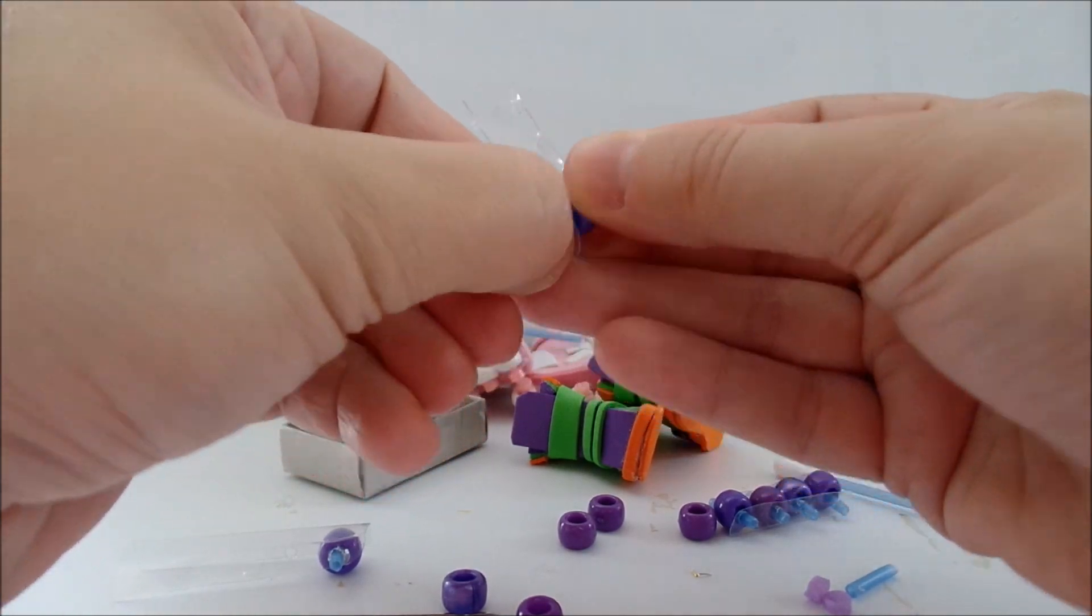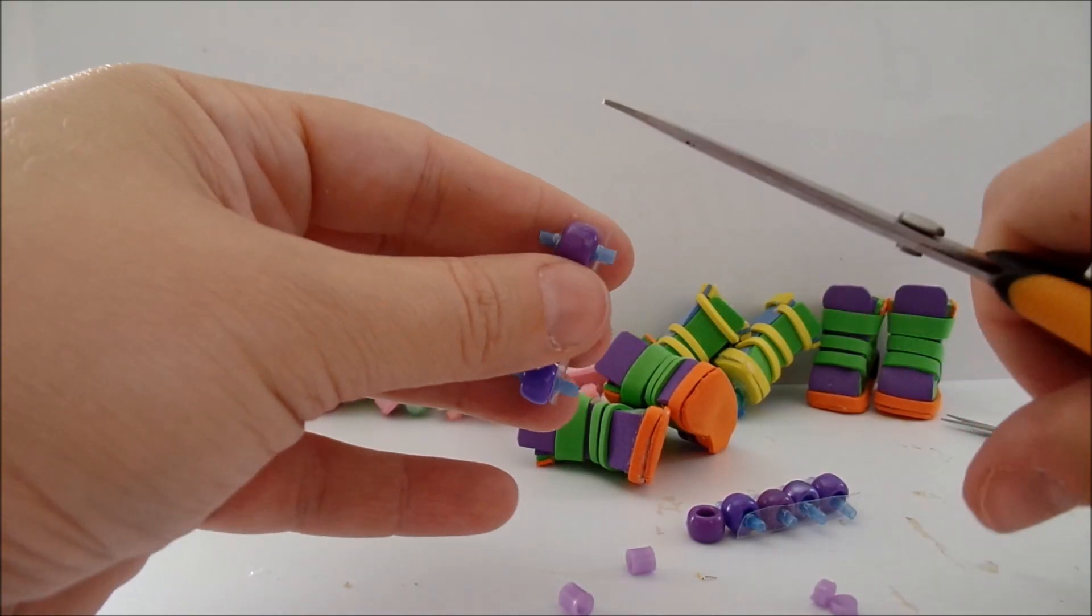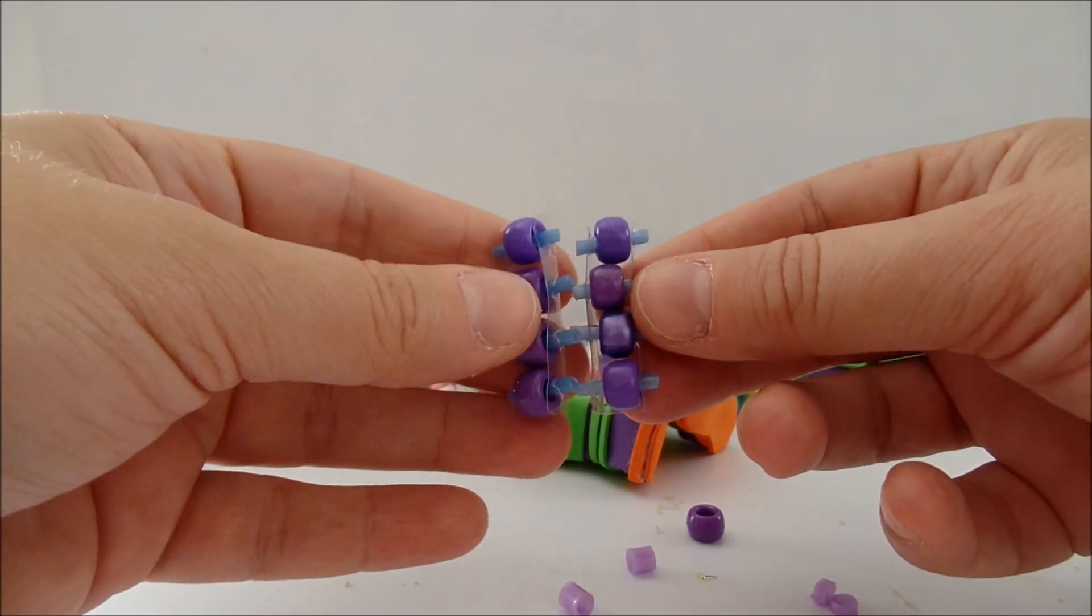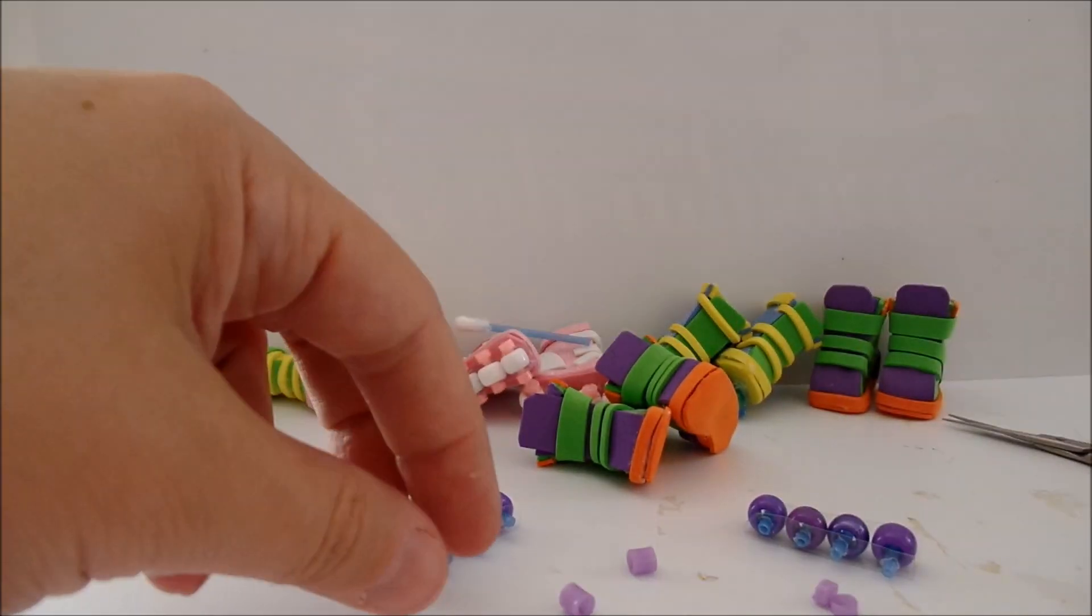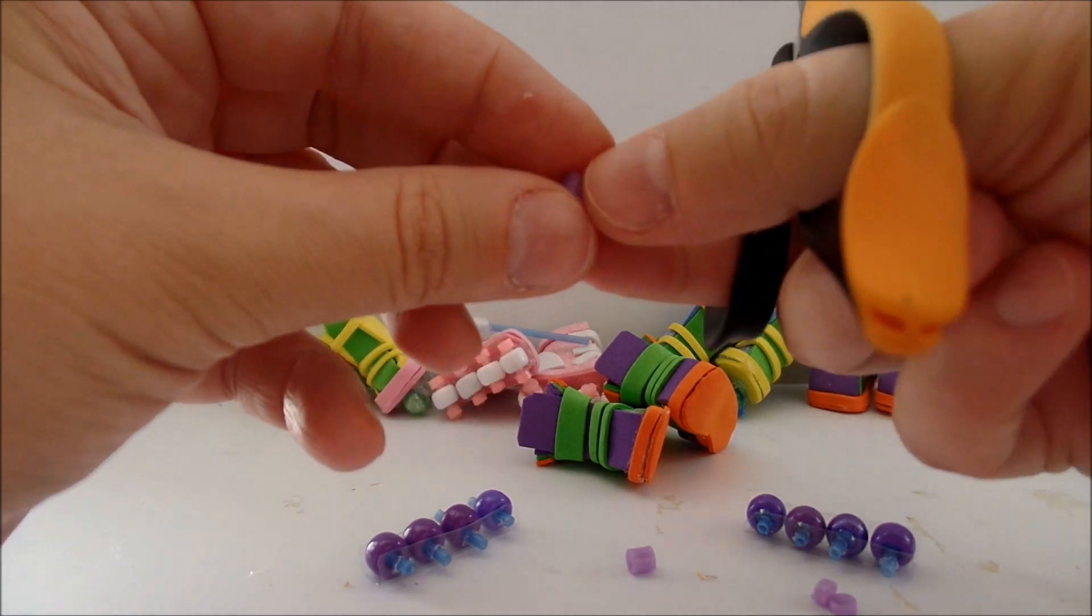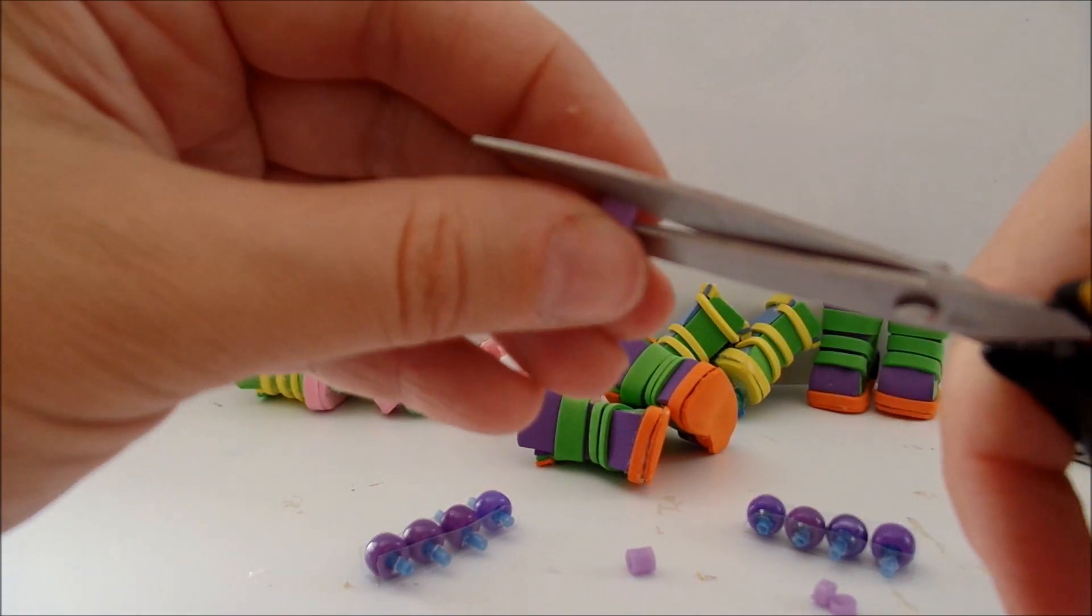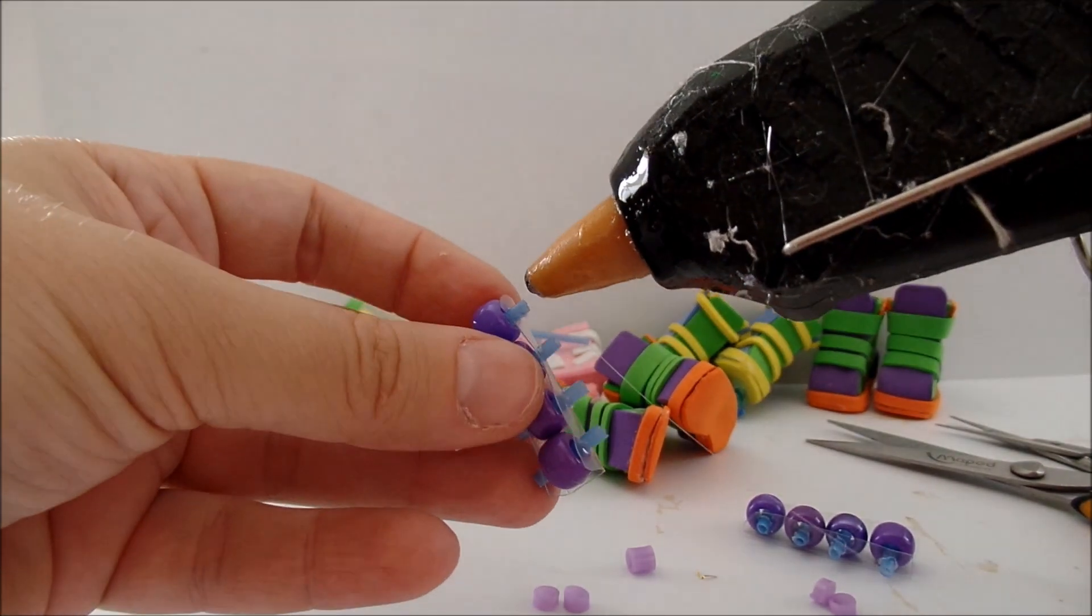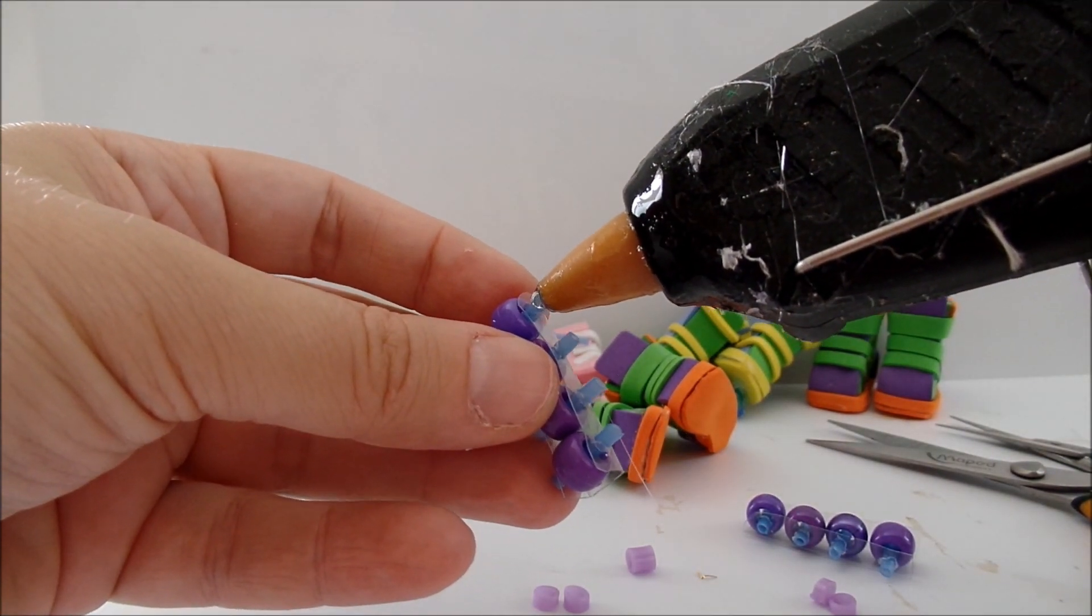Now insert all the beads. You can trim off the excess of the plastic if you have. Now you have these wheels. I take a bunch of these beads, cut them in half, and I simply glue them around the q-tips.